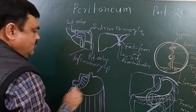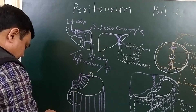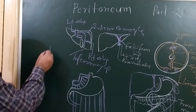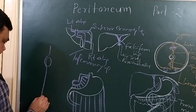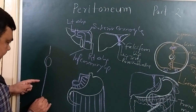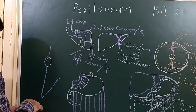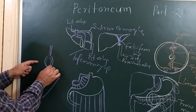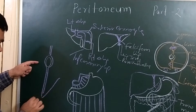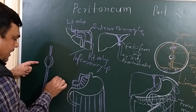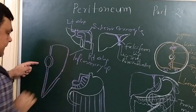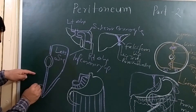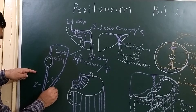This is the greater omentum. If you cut a section here, you can see the position of the stomach. This is the lesser omentum and this is the greater omentum. The greater omentum forms four layers: this is the first layer of the greater omentum, it forms the fourth layer, and this is the second layer. It covers the stomach from the posterior side, then becomes the second, third, and fourth layer of the greater omentum. This is the lesser sac, this is the first, second, third, and fourth layer of the greater omentum.